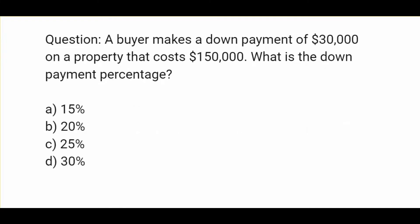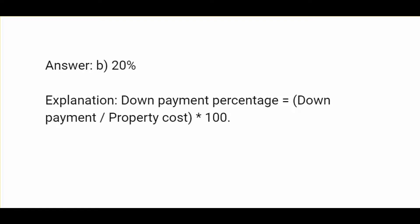A buyer makes a down payment of $30,000 on a property that costs $150,000. What is the down payment percentage? Options are 15%, 20%, 25%, or 30%. The answer is 20%. Down payment percentage equals down payment divided by property cost times 100.